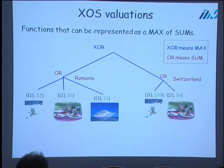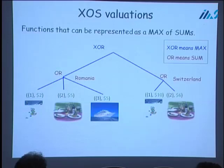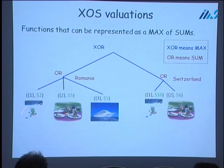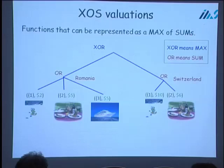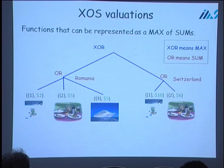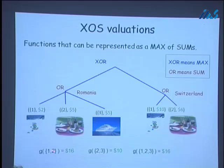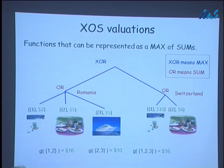For instance, assume F is the value of a customer on a bundle of vacation activities. The items would be the types of vacation activities, and each 'or-clause' would correspond to a vacation site. The value of the customer on a bundle of activities would be the maximum value of the bundle over all possible locations. For example, the value on the set {1, 2} would be 16 because of the Switzerland clause, and the value of the set {2, 3} would be determined by the Romanian clause.